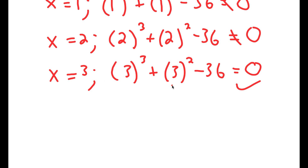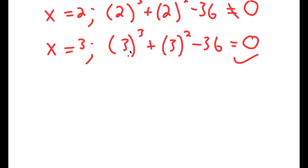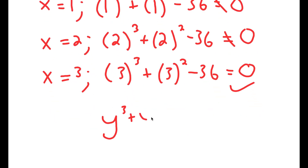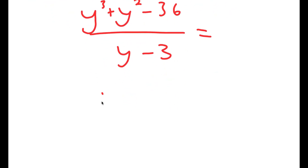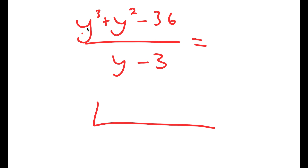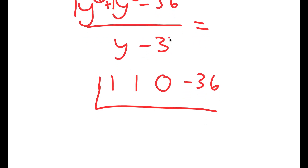Now that I have y equals 3 as a solution, what I have to do is divide y to the power of 3 plus y squared minus 36 by y minus 3. To divide these two, I'm going to use synthetic division. Basically, we have our coefficients of our numerator here. The first coefficient is 1, the second one is 1 as well. We don't have y to the power of 1 here, so we just say 0. And finally, we have negative 36 at the end, and our denominator value is 3.